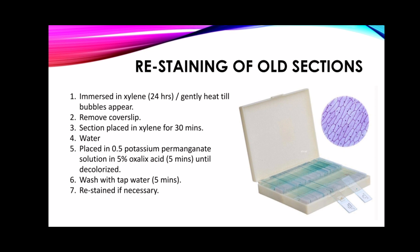In re-staining of old, bleached, or faded sections, the slide is usually immersed in xylene for 24 hours or gently heated until the mounting medium begins to bubble. The cover slip is then removed by lifting with a dissecting needle. The section is placed in xylene for 30 minutes to remove remaining balsam and brought down to water. It is placed in 0.5% potassium permanganate solution for 5 to 10 minutes, rinsed in tap water, then immersed in 5% oxalic acid for 5 minutes or until decolorized. After washing again in running tap water for 5 minutes, the section may then be re-stained with the appropriate staining technique.